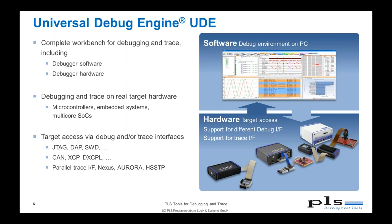Not only dedicated debug interfaces are supported — we also have support for CAN or CAN-based interfaces that can be used as a debug channel. For example, XCP or XCCPL, which provides the possibility to tunnel debug information over CAN or other interfaces. For tracing we also have support for different types of trace interfaces from different vendors, including parallel trace interfaces from ARM Cortex-based or power architecture devices, and Nexus from the power architecture world.